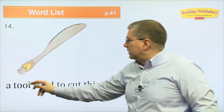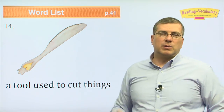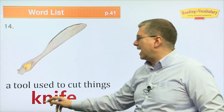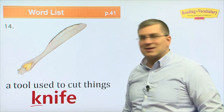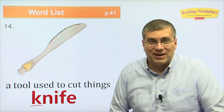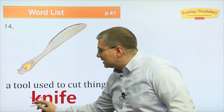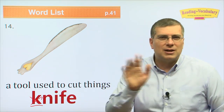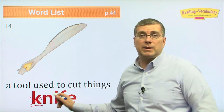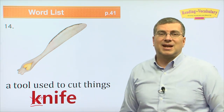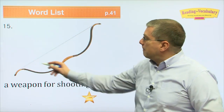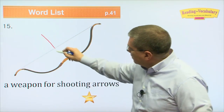Number fourteen: a tool used to cut things — a knife. Be careful about the spelling: it's not 'k-nife' out loud; it's just 'knife.' The K is silent. We spell it with a K but don't say it: knife. English is crazy!